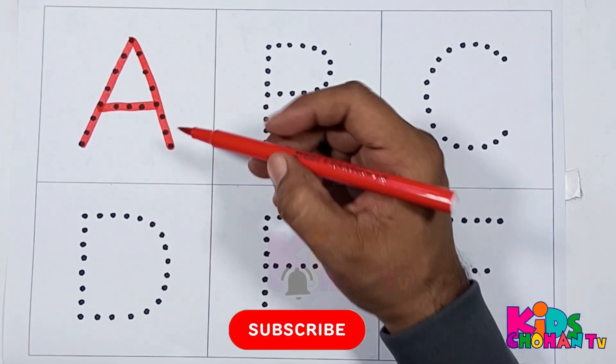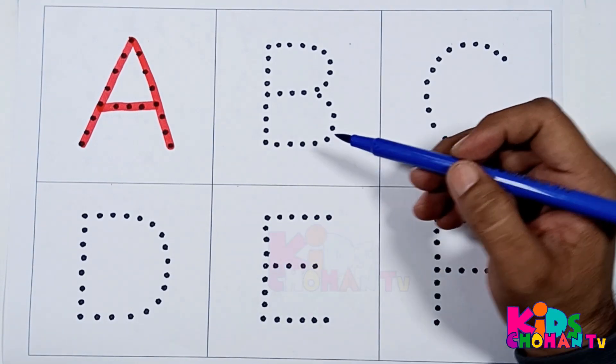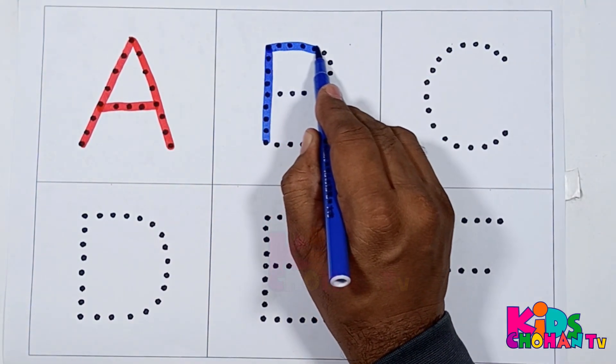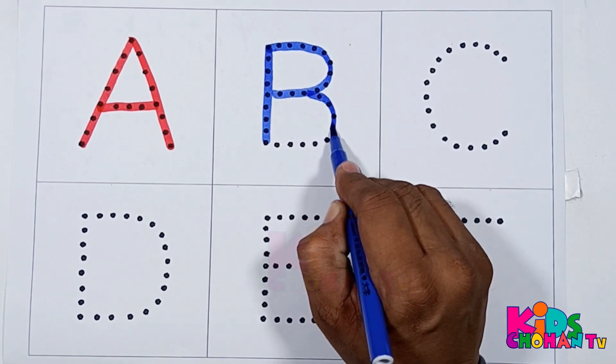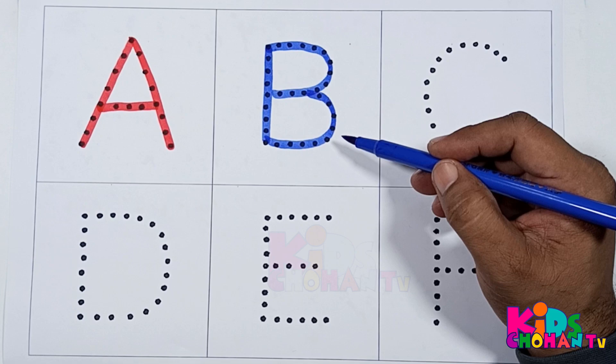Blue color. Kids, we are tracing letter B with blue color. B. B for bat.